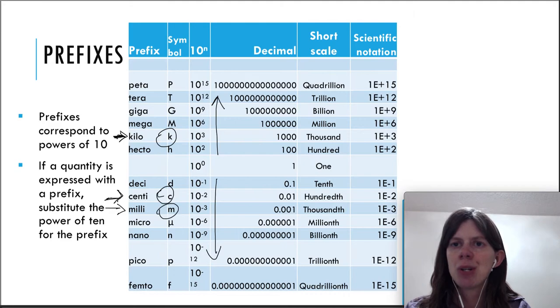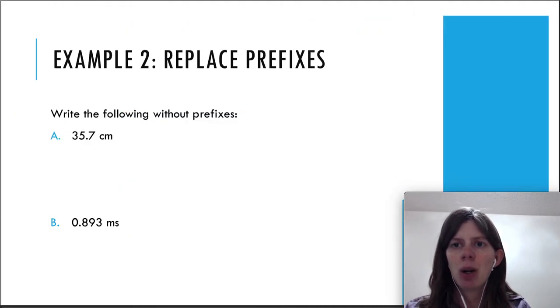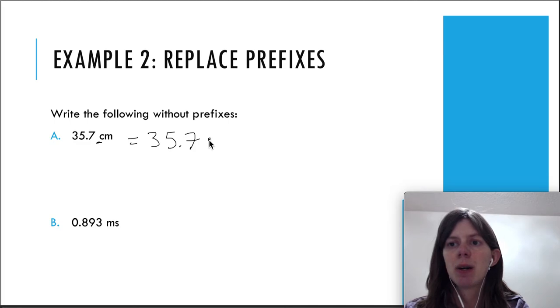In this example here, we have 35.7 centimeters and we're trying to write it without prefixes. We see this prefix in front of the unit here. All we have to do is replace it with a power of 10. The previous slide told us that centi was 10 to the negative 2. So replace centi here, you can write a little multiplication sign, 10 to negative 2 meters. Now if you multiply by 10 to negative 2, a negative exponent means you're going to move the decimal two places to the left. So that's going to be 0.357 meters.